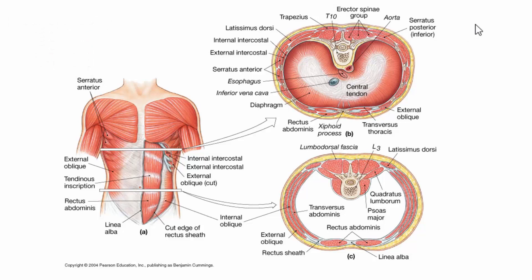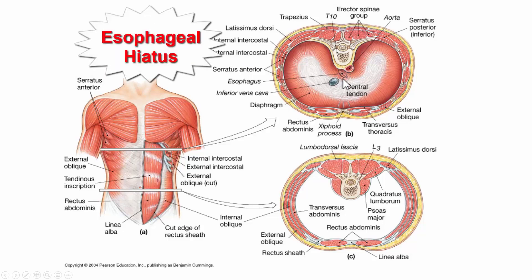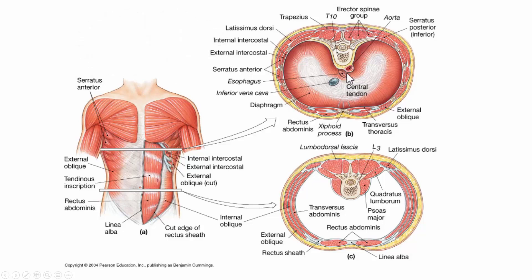On the diaphragm, you can see that the esophagus pokes through, the aorta goes through at the back, and here's the inferior vena cava, along with the central tendon. The esophagus goes through the diaphragm right where the stomach begins. Sometimes there's a weakening there, called the diaphragmatic hiatus, and a portion of the stomach can actually bulge up above the diaphragm — we call that a hiatal hernia.